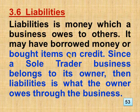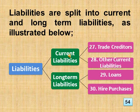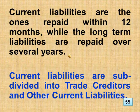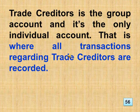Section 3.6 Liabilities: Liabilities is money which a business owes to others. It may have borrowed money or bought items on credit. Since a sole trader business belongs to its owner, liabilities is what the owner owes through the business. Liabilities are split into current and long-term liabilities. The group accounts among current liabilities are trade creditors and other current liabilities. Current liabilities are the ones repaid within 12 months. Trade creditors is the group account and it's the only individual account — that is where all transactions regarding trade creditors are recorded.